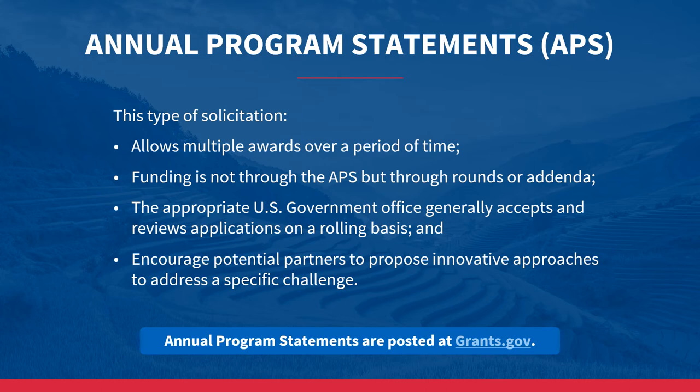USAID missions, bureaus, and technical offices can issue addenda under an APS. An addendum may highlight specific development objectives and programs that the mission, bureau, or technical office would like to support under a main APS, sometimes referred to as a global APS. Concept papers proposed in response to addenda must comply with the terms and criteria outlined in the main APS. This type of solicitation is the most common means of soliciting applications from NGOs.